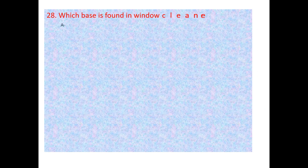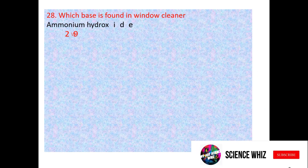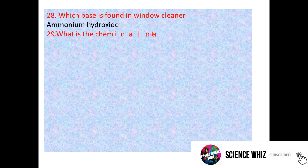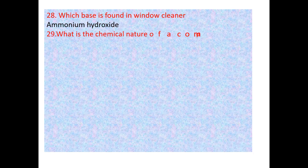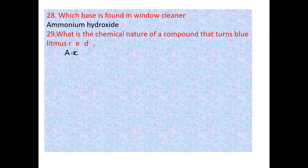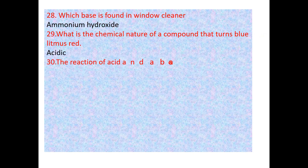Question: Which base is found in window cleaner? Ammonium hydroxide. Question: What is the chemical nature of a compound that turns blue litmus red? That is acidic.